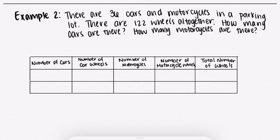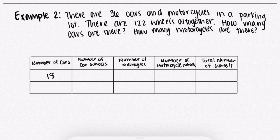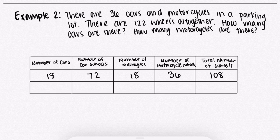Example 2: There are 36 cars and motorcycles in a parking lot. There are 122 wheels altogether. How many cars are there and how many motorcycles are there? We will use method one from the last problem. First, guess a random number of cars and motorcycles that still adds up to 36. I'm going to say there are 18 cars and 18 motorcycles. Since each car has four wheels, 18 cars will give 72 wheels. Since each motorcycle has two wheels, 18 motorcycles will give 36 wheels, for a total of 108 wheels. But the question says there are 122 wheels, so we need 14 more wheels.